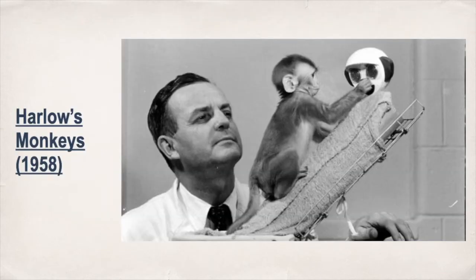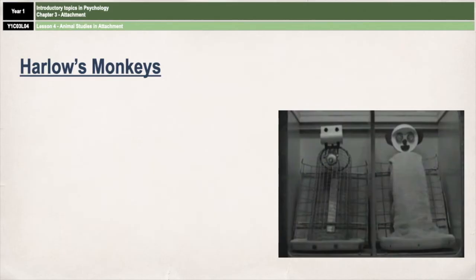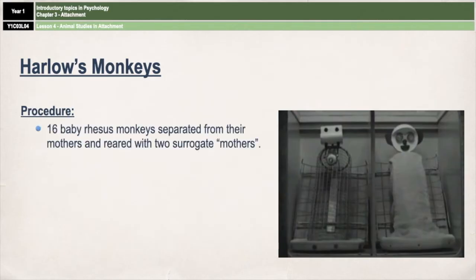Our second study is Harlow's monkeys from 1958. This is possibly one of the most well-known animal studies, often for all the wrong reasons, but it is one of the most important in terms of informing our understanding of attachment and the nature of love. In his research, Harlow removed 16 baby rhesus monkeys from their mothers and reared them with two surrogate mothers. One was made entirely of wire, whilst the other was also made of wire but covered in soft cloth and heated with a hot water bottle.